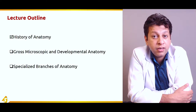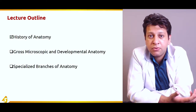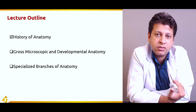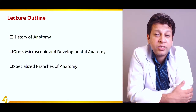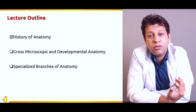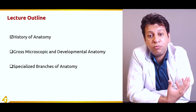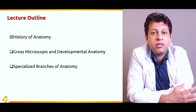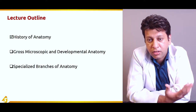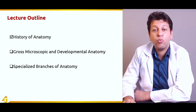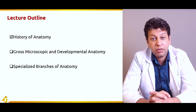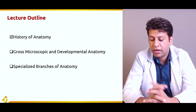To summarize what we have covered: the history of anatomy started with dissecting out pigs and apes, then people realized humans are different, and it transitioned into dissecting dead humans. After the invention of the microscope, it was realized there is a world invisible to the naked eye, so the focus shifted to discovering things we cannot see with the naked eye. Next, we will cover gross, microscopic, and developmental anatomy, and specialized branches of anatomy.